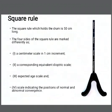The square rule is 50 centimeters long and holds the drum. The four sides of the square rule are marked differently: a centimeter scale in one centimeter increments on the first side, a corresponding equivalent dioptric scale on the second side, an expected accommodation scale on the third side, and a scale indicating the position of normal and abnormal convergence on the fourth side, as seen in this figure.